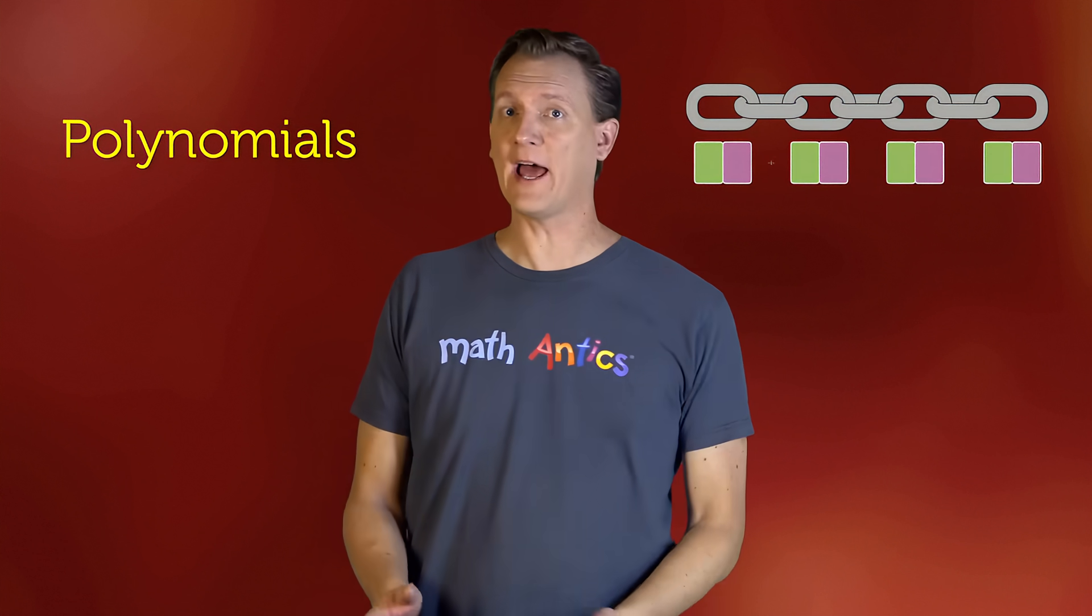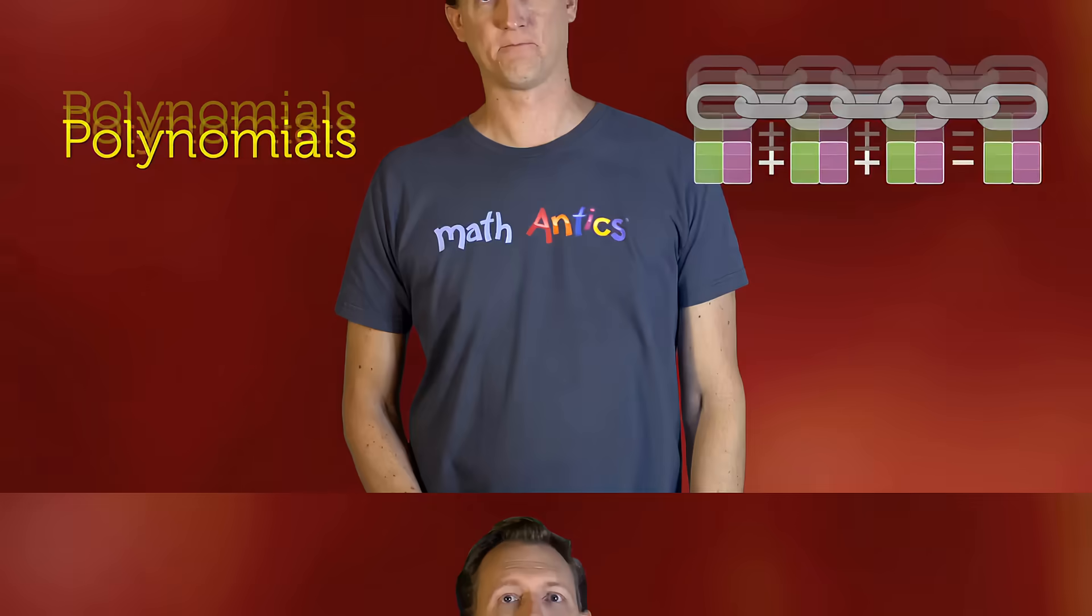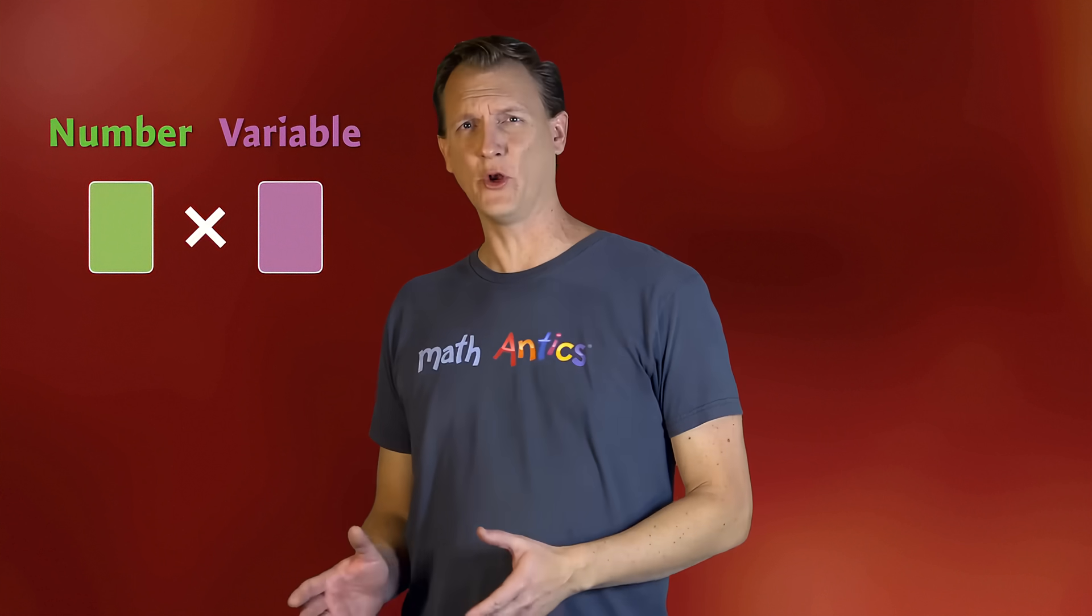In our last basic algebra video, we learned about polynomials. Specifically, we learned that polynomials are chains of terms that are either added or subtracted together. And we learned that the terms in a polynomial each have a number part and a variable part that are multiplied together. If you don't remember much about polynomials, you might want to re-watch the first video before you continue. Go ahead. I'll wait.